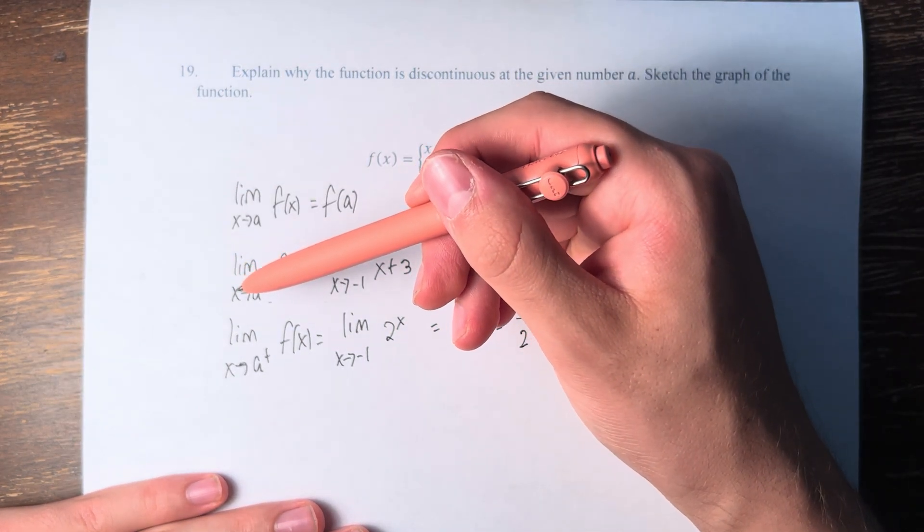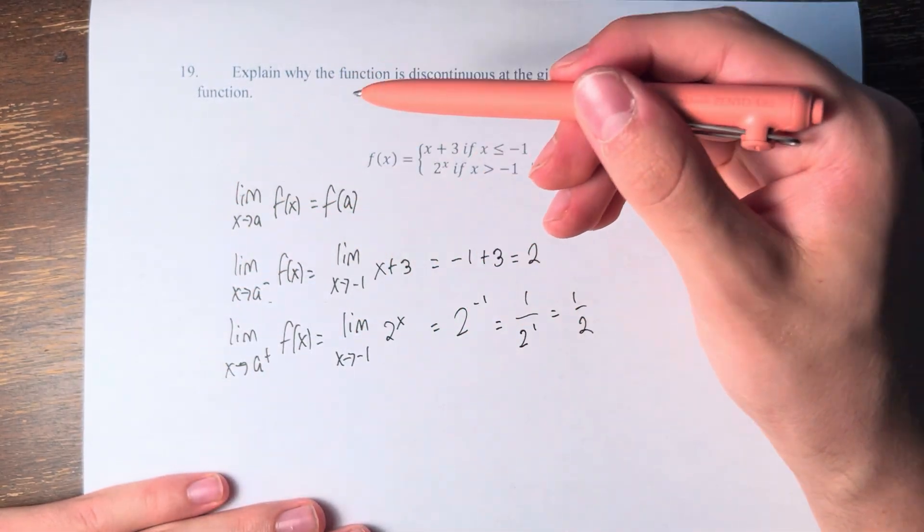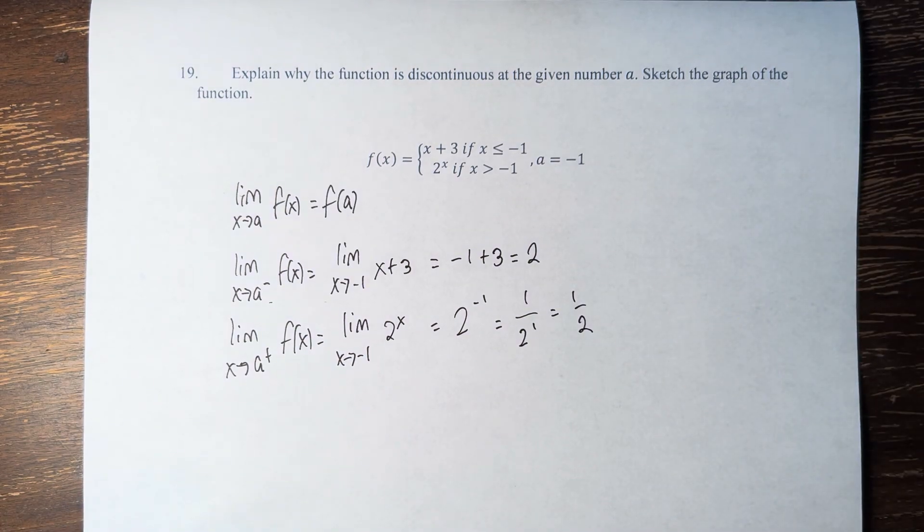Therefore, since the limit as x approaches a from the left and the right do not equal each other, the limit does not exist and therefore cannot equal the value of the function because it does not exist in the first place.